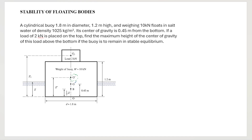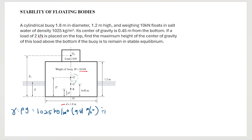So, the illustration is shown here. The buoy has a circular cross-section, 1.8 meters in diameter, and a height of 1.2 meters, with the 10 kilonewton load. It's in saltwater with density 1025. If we compute for gamma, that is rho times g, equal to 1025 kg/m³ multiplied by 9.81 m/s². Converting to kilonewtons by dividing by 1000, our gamma is equal to 10.055 kilonewtons per cubic meter. That is our gamma for the saltwater.